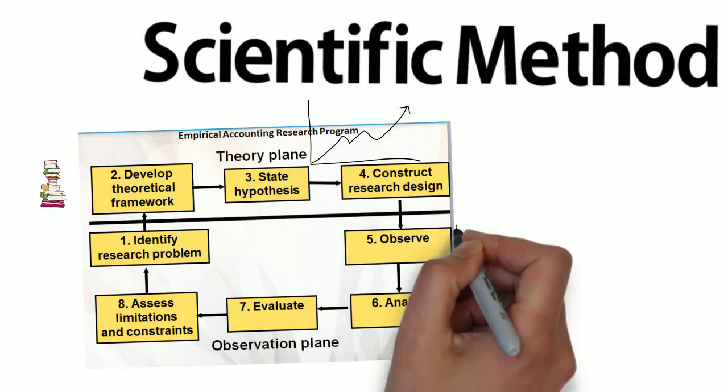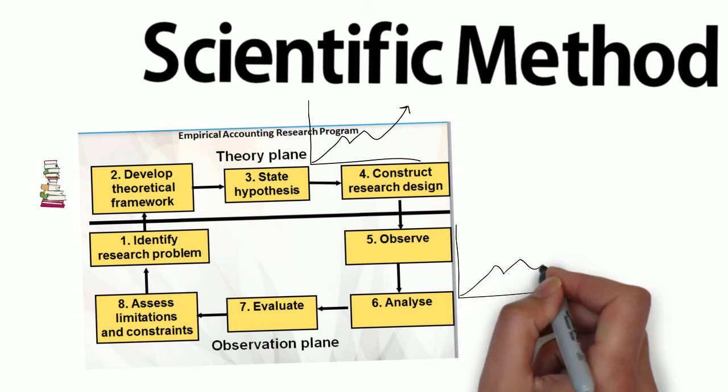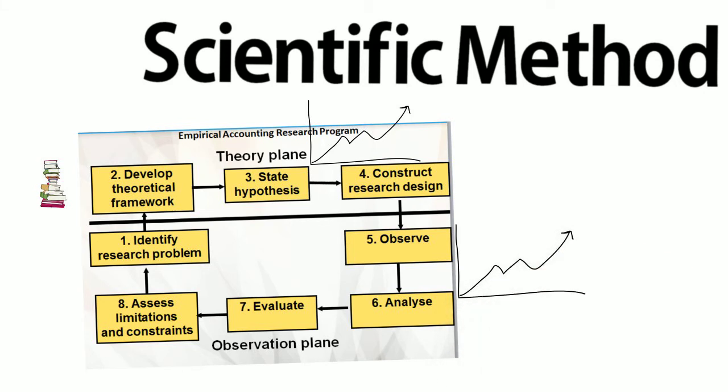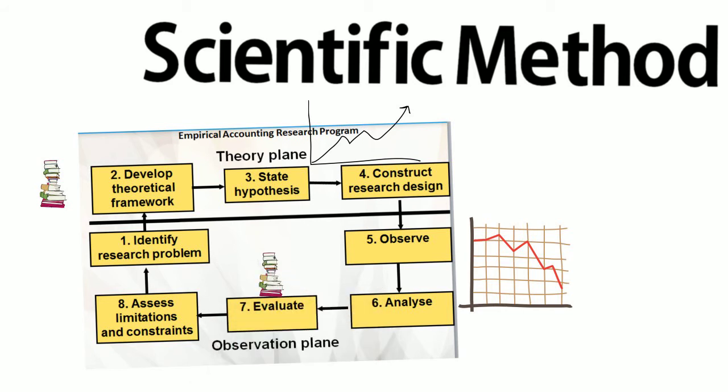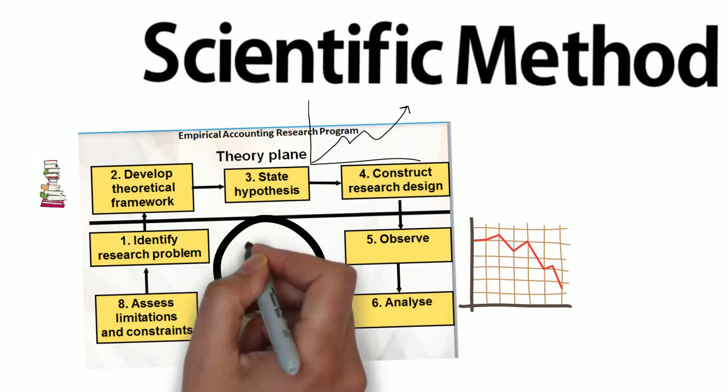If the theory makes predictions that are supported by what we see through observation of the real world, then we become a little more confident in our theory. If the theory leads us to make predictions that are not consistent with what we see in the real world, we have to go back and change, expand, or perhaps even completely abandon the theory.